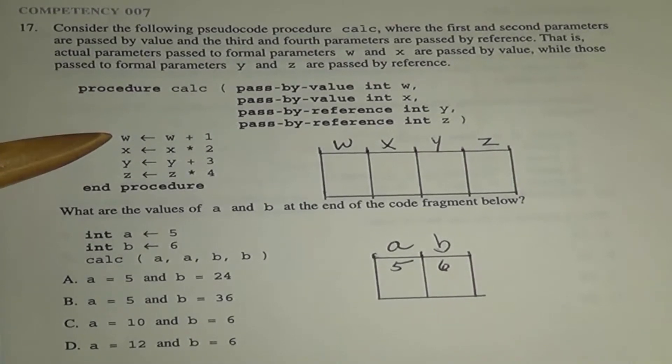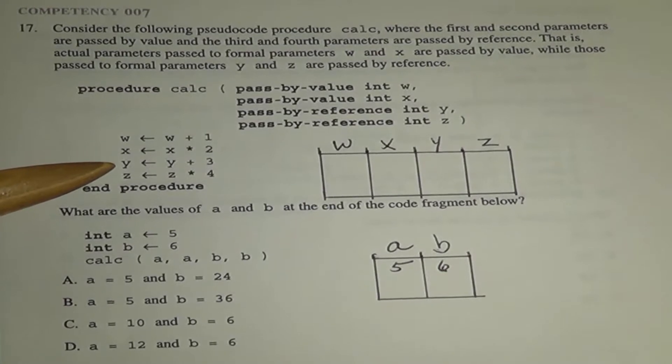When calc does its thing, W becomes W plus 1, X becomes X times 2, Y becomes Y plus 3, and Z becomes Z times 4.